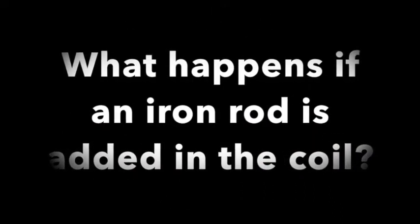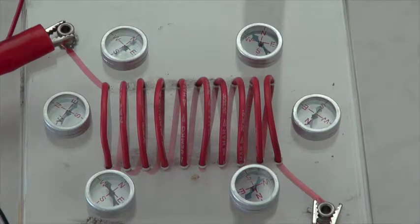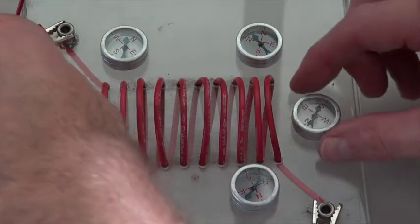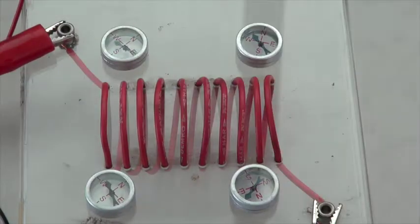Okay now what happens if I put an iron core through the coil? So in this case what I'm going to do is just turn the electricity off. I'm going to get rid of those front two compass needles. I'm going to put an iron rod through the middle of them.